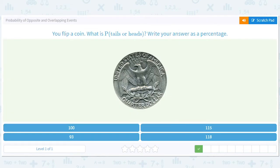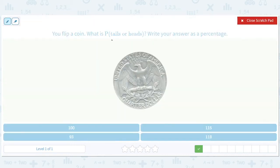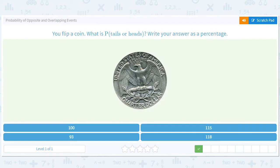You flip a coin. What is the probability of tails or heads? Write your answer as a percentage. Now, that's just tricky wording. If someone said to you, hey, I'm going to flip this coin. What's the probability that I get heads or tails? You'd go, that's always going to happen. You're always going to get either heads or tails. That's a stupid question, right? And the way of saying something's always going to happen is you say it's 100%, right? The probability that you either get tails or heads is 100%.